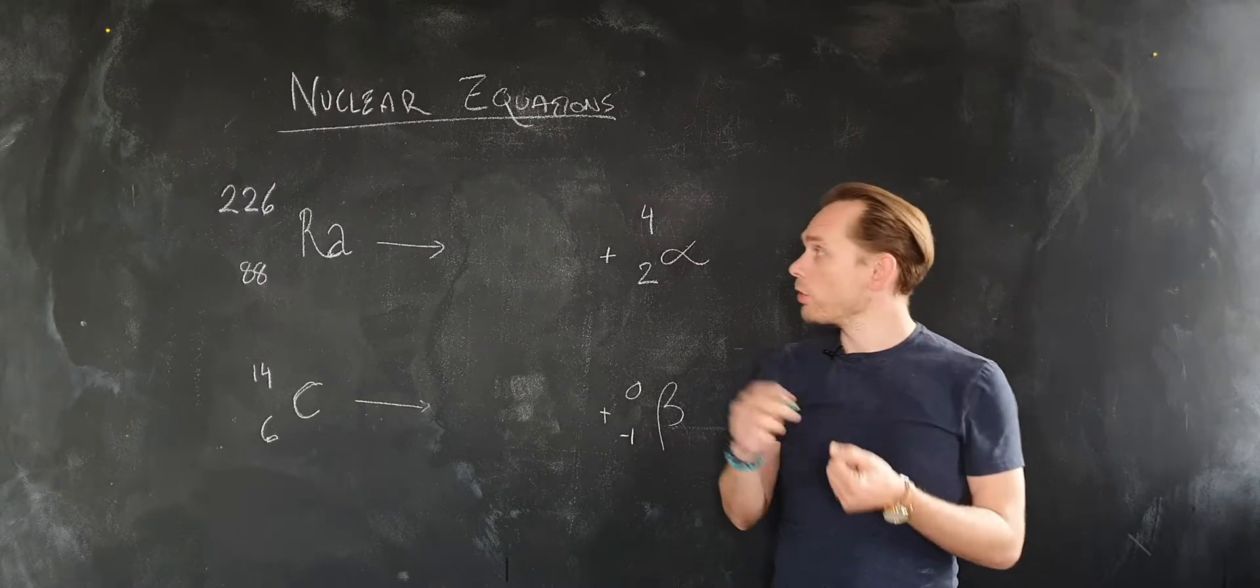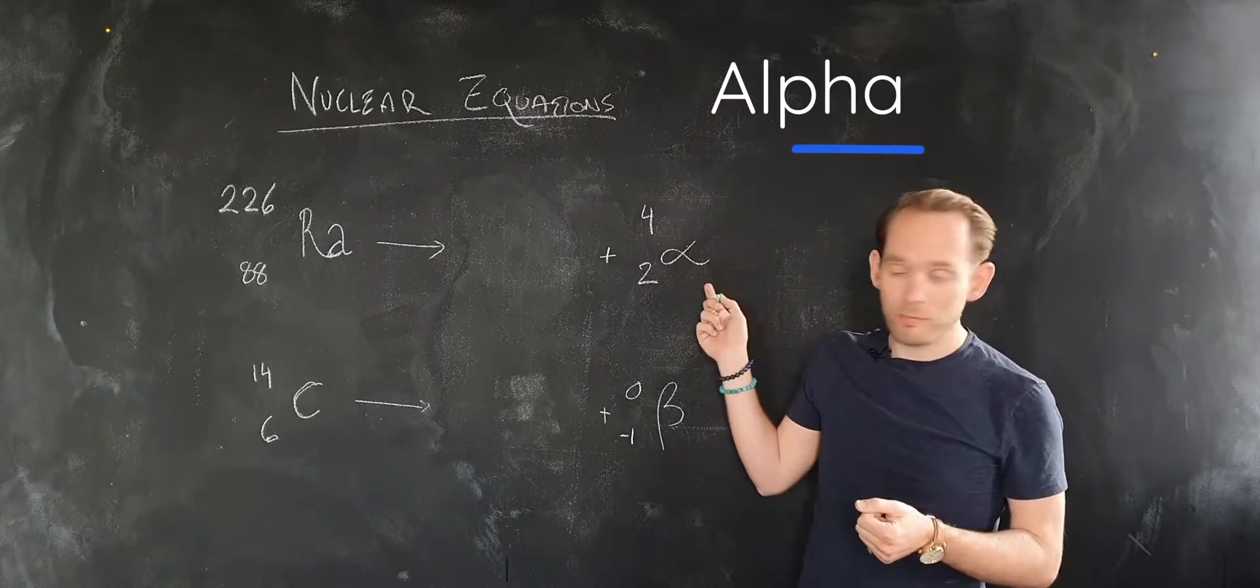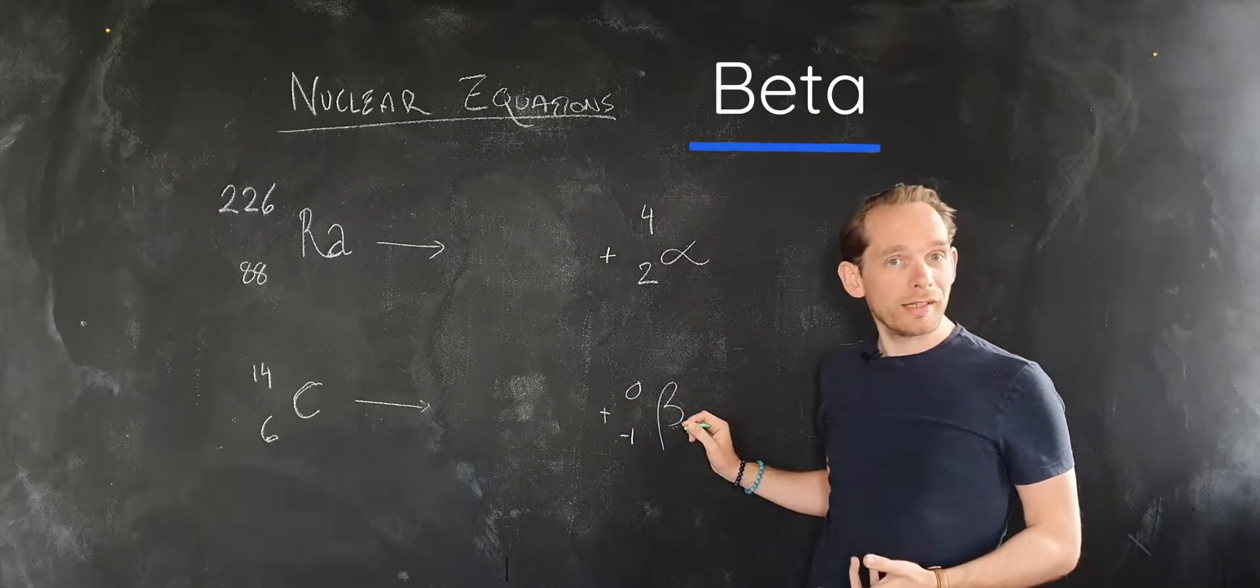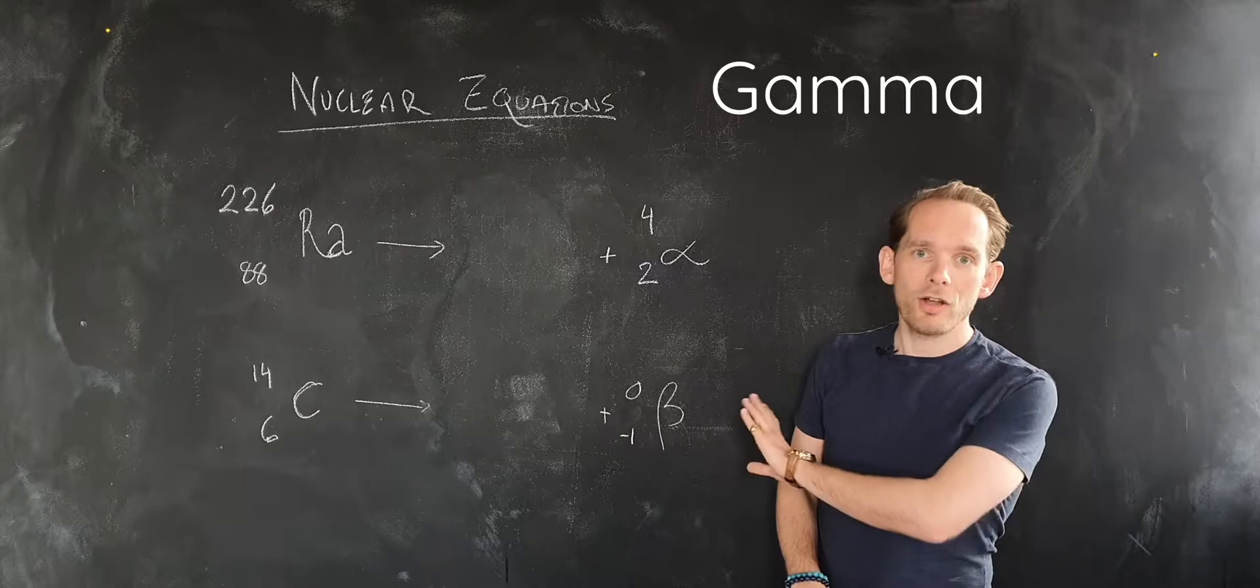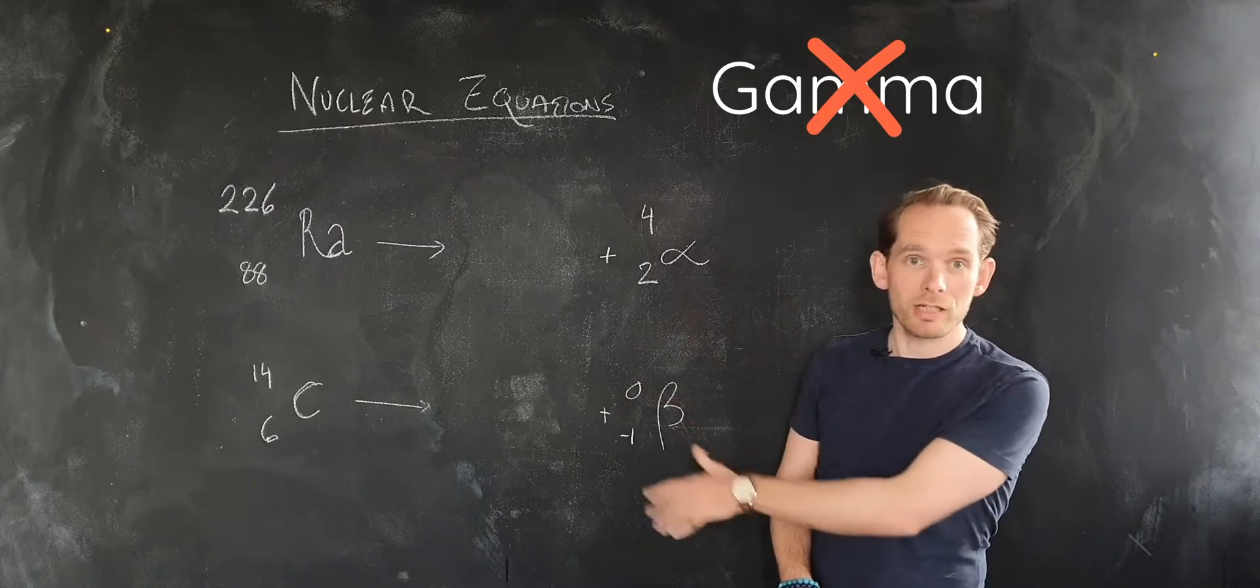You need to know, first of all, what an alpha particle is, its charge and mass. What a beta particle is, its charge and mass. And incidentally, if you're asked about gamma decay, know that that isn't a particle, it doesn't enter into this kind of thing at all.